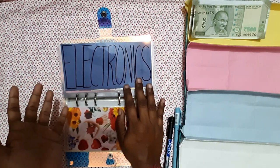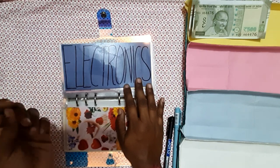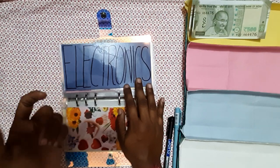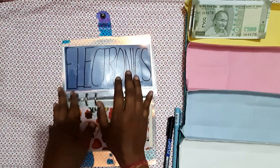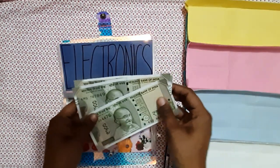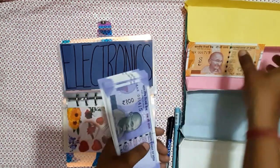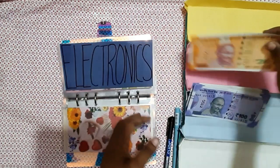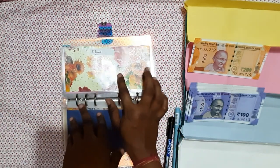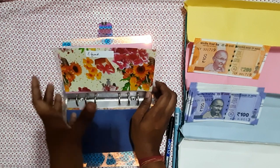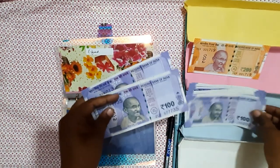Next is electronics — this can be an emergency need like a defect in your phone or earphones, or buying new earphones, a temper glass, or a back cover. Give electronics 200 rupees. I'll change some notes into hundreds. Next we have an emergency fund or unbudgeted expenses — give yourself 300 rupees for that.